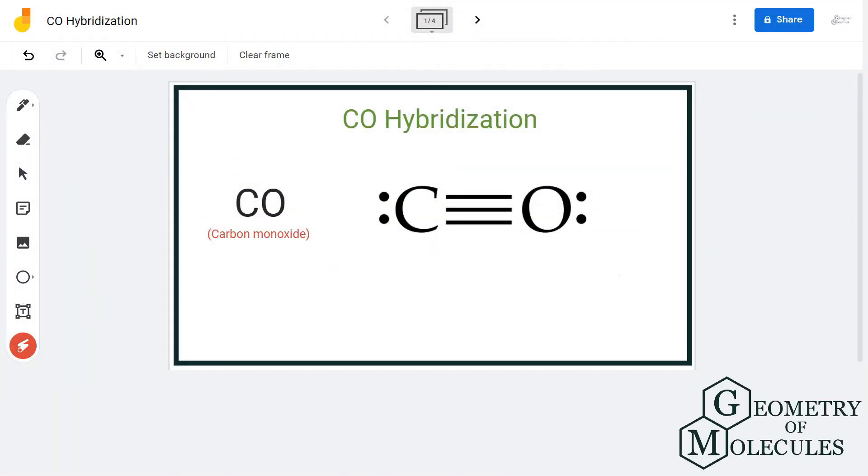Hi guys, today in this video we are going to look at the hybridization for the CO molecule, the chemical formula for carbon monoxide. To determine this hybridization, we are first going to look at its Lewis structure.